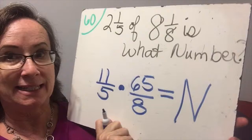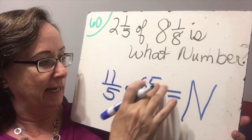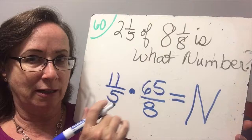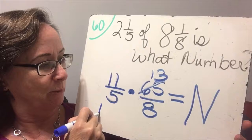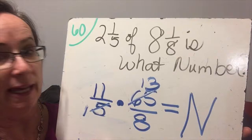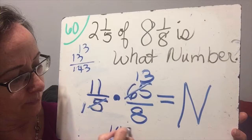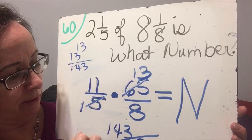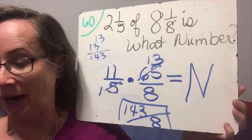'Is' is equal, and 'what number' is n. We just need to simplify and multiply. Eleven doesn't cancel with eight or sixty five, but sixty five and five — sixty five divided by five is thirteen. So five divided by five is one; we cancel those. Now we multiply across: eleven times thirteen is one hundred forty three in the numerator, and eight in the denominator. So n equals one hundred forty three over eight.